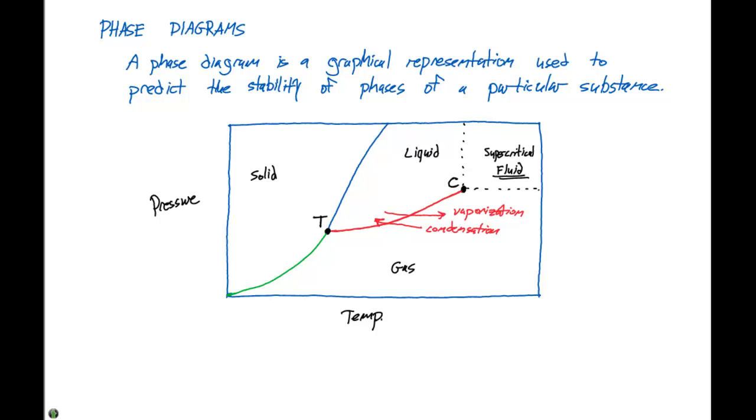If we now look down here at this green curve right here, this represents the equilibrium between our solid and our gas. So if we go from a solid to a gas, this is our sublimation. And if we go from the gas to the solid, this is deposition. And this is referred to as our sublimation curve, and it separates the solid phase and the gas phase.